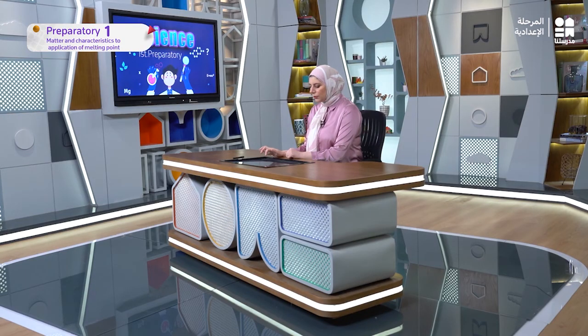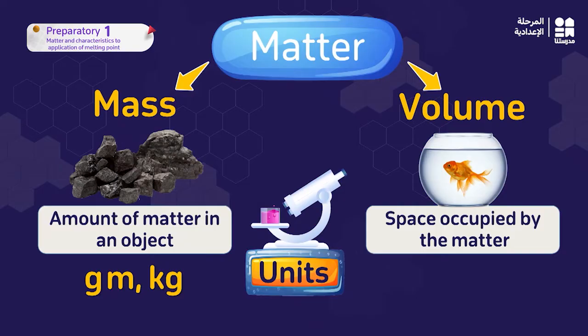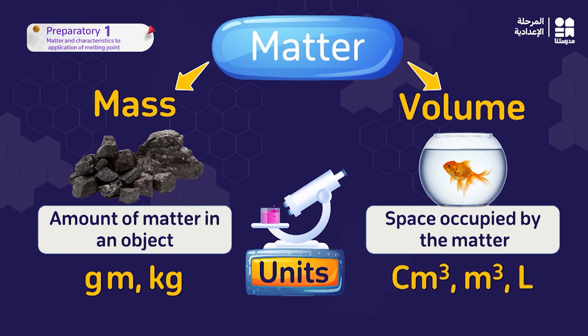Now let's talk about the units of mass. The units of mass are gram and kilogram — gram for small masses like jewelry, like a ring, and kilogram for very large masses like fruits and vegetables. For volume, we have cubic centimeter and cubic meter for solids, and liter for liquids.